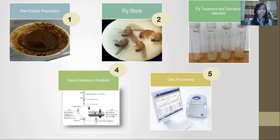For plant extract preparation, samples of Muntingia calabra were obtained from Makassar, South Sulawesi, Indonesia. The sample was prepared by maceration method.